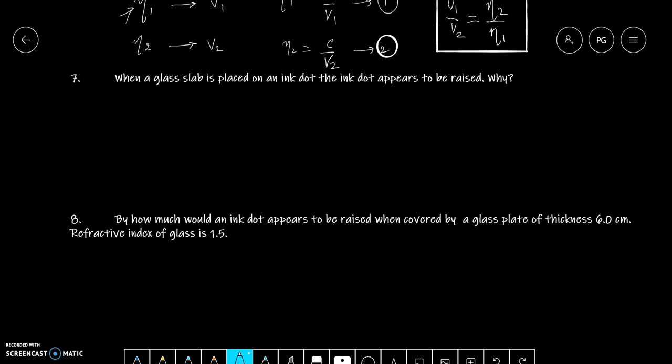Question 7 says, when a glass slab is placed on an ink dot, the ink dot appears to be raised. Why? This is so because of refraction of light. And here the apparent depth is equal to real depth upon refractive index of glass with respect to air.